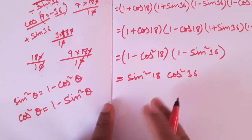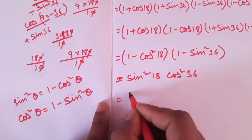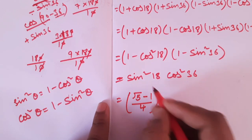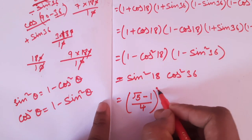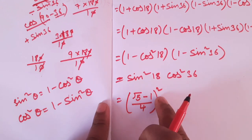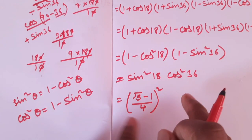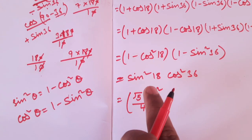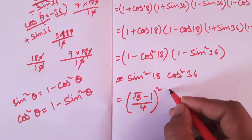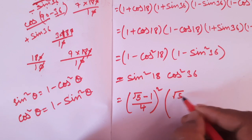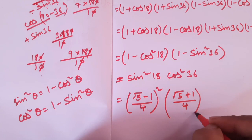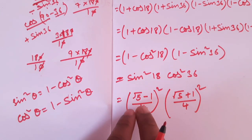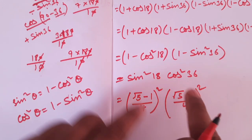Sin 18 value is equal to root 5 minus 1 by 4. Square theta equals square theta — sin 18 value. So 36 value: minus 1 plus root 5 plus 1 by 4 squared. This is same as (a minus b)(a plus b).